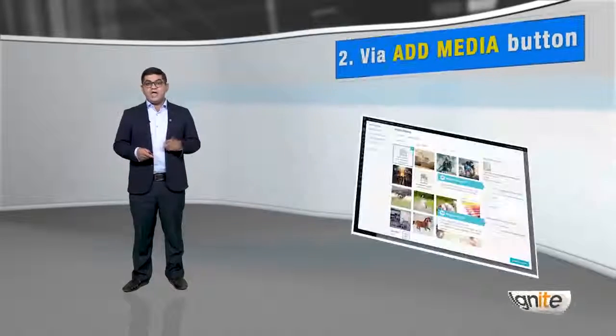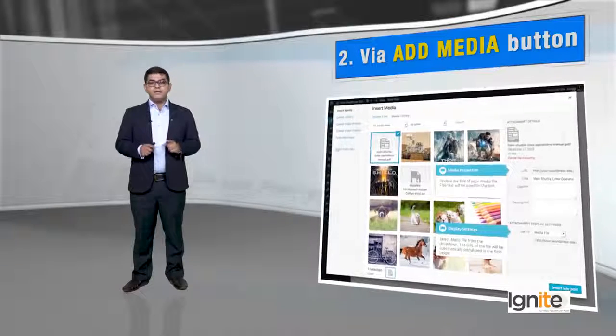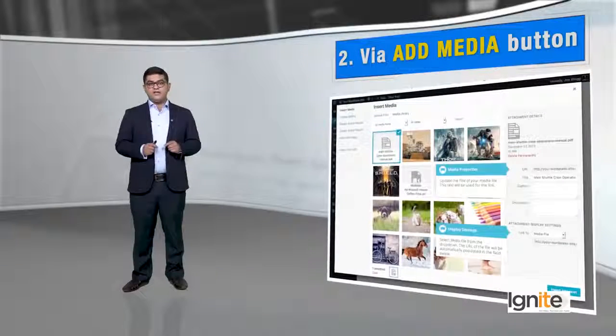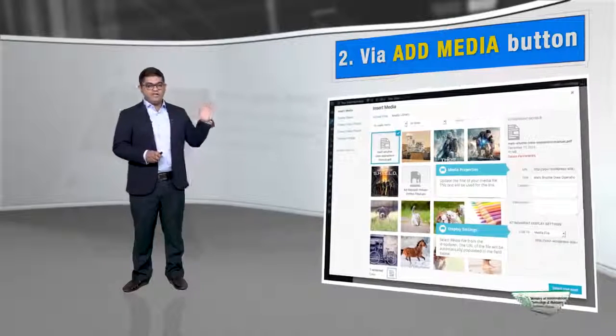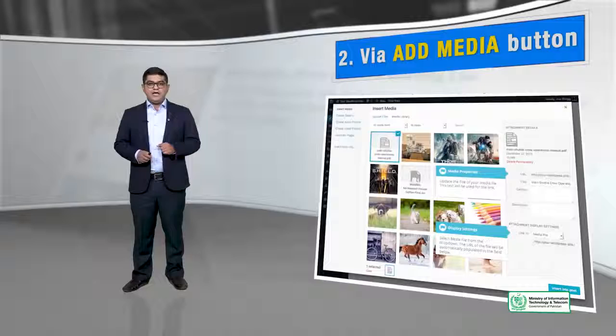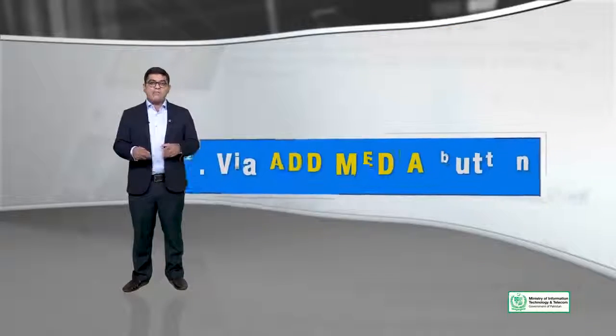Doosra tariqa yeh hai ke aap Add Media button pe click karen. Aur Add Media button pe jab aap image ko select karte hain, toh right side pe jo aapke options hain, those options will actually show you ke aap us image ko kis se link karna chahte hain — ya aap image ko ek custom URL se link karna chahte hain, ya uski badi image file se, ya ek attachment page se link karna chahte hain. Three options hain jo aapko WordPress dega.